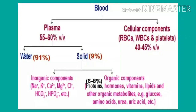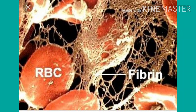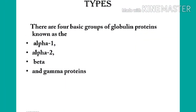Proteins constitute about 6 to 8% of plasma. Fibrinogens, globulins and albumins are the major plasma proteins. Fibrinogen is an important clotting factor produced by the liver. Globulins are primarily involved in the defense mechanism of the body. They are grouped into three subtypes: alpha globulins, beta globulins and gamma globulins.